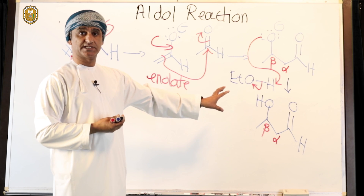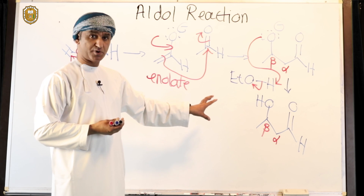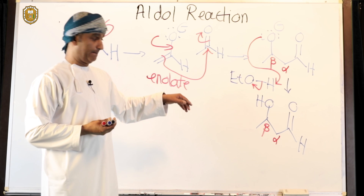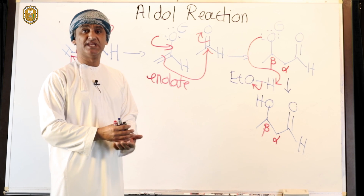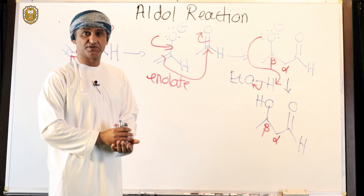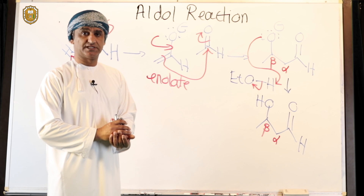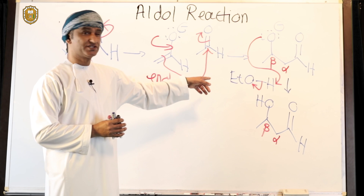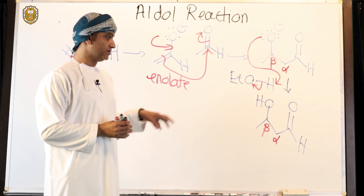So the beta-hydroxy aldehyde is actually formed. Now, after its formation, this product will undergo an elimination reaction to give finally the alpha-beta unsaturated carbonyl compound — or aldehyde in this case — under catalytic base conditions.